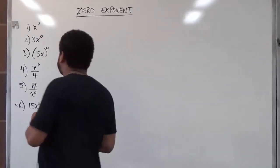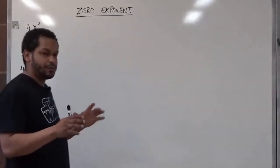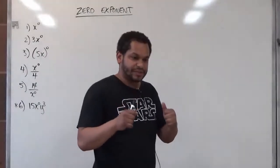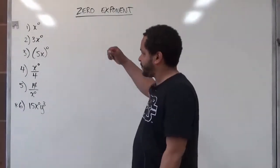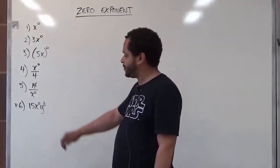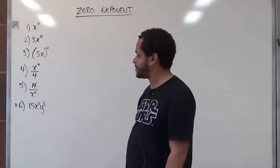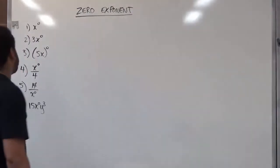For the most part, anything raised to the power of zero is always going to give us a one. It just becomes the constant one. And so we're going to take a look at these six problems that range from very easy to a little bit more difficult and applications of how the zero exponent works. So let's begin with the first problem.